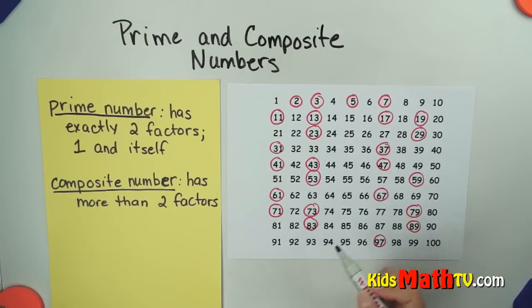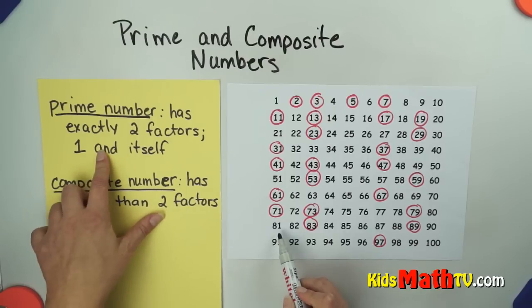For each of the other numbers on here, such as 81, you can multiply nine times nine to make 81, so it is not prime. It doesn't have exactly two factors, one and itself.